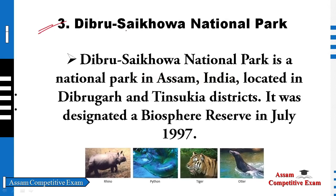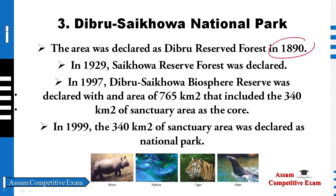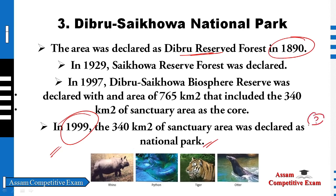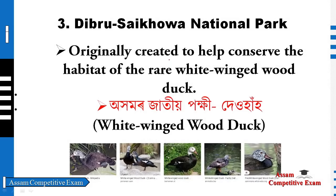The next national park is Dibru-Saikhowa National Park. Dibru-Saikhowa National Park is in the 3rd district. The first one is the Dibru Reserve Forest. The other one was declared as Dibru Reserve Forest in 1999, which was then declared as a National Park. The question is whether the first place of the White-winged Wood Duck is in the middle — the White-winged Wood Duck is in this national park.